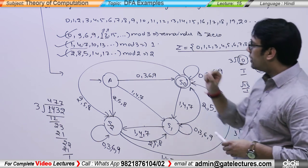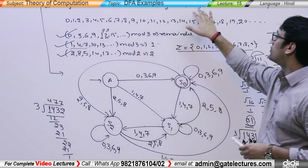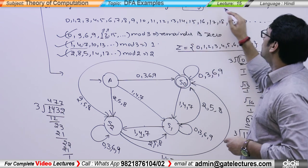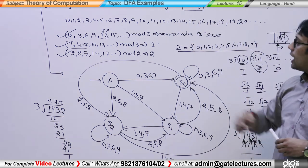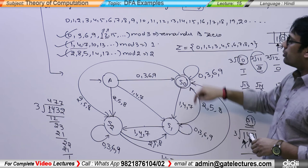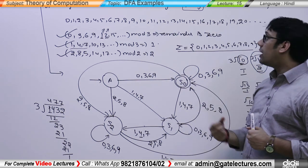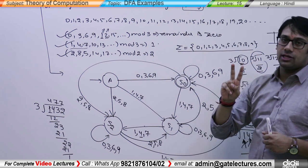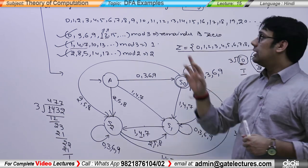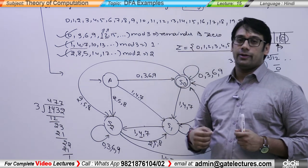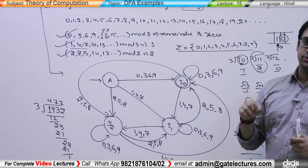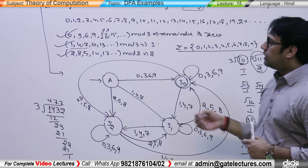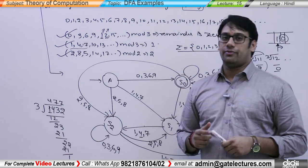The next question is: design a DFA to check whether a given binary number is divisible by 3. In the second case we are discussing binary numbers divisible by 3. This whole diagram is completely different compared to decimal numbers, because in binary numbers we have only 2 symbols: 0 and 1. In decimal numbers we had 10 symbols, that is 0 to 9. We will look at an example in the next video on how to solve the same question in terms of binary numbers.